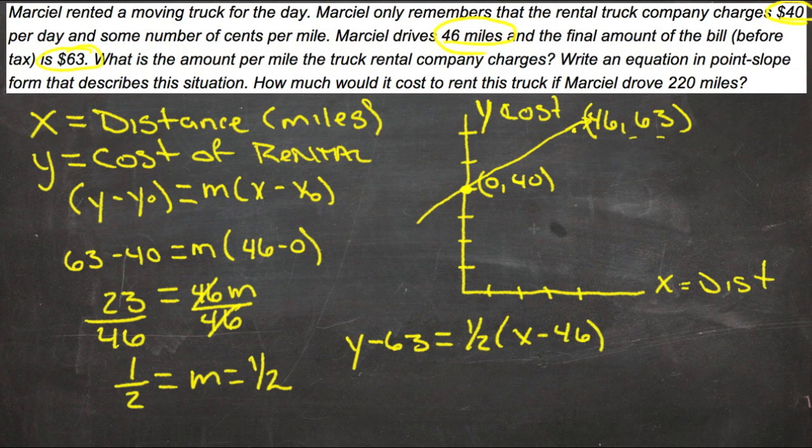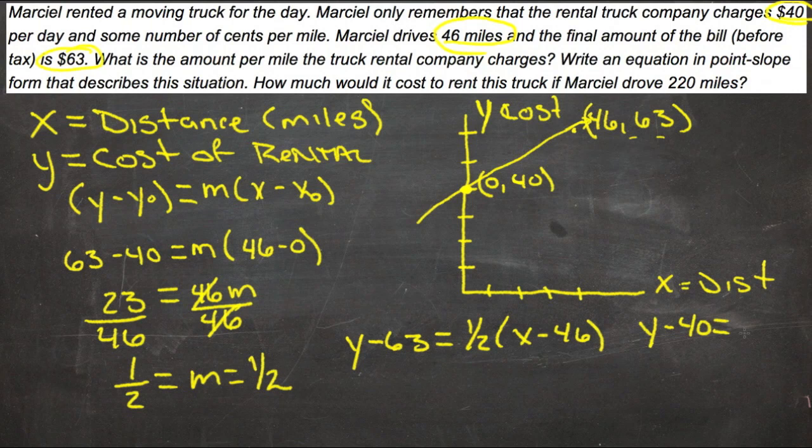Obviously we could use the other point too. We could do y minus 40 equals 1/2 times (x minus 0), so just x. Actually that one would be easier to use, wouldn't it?